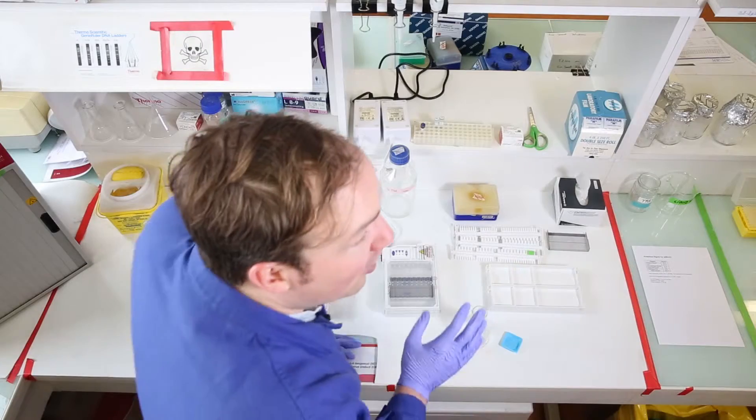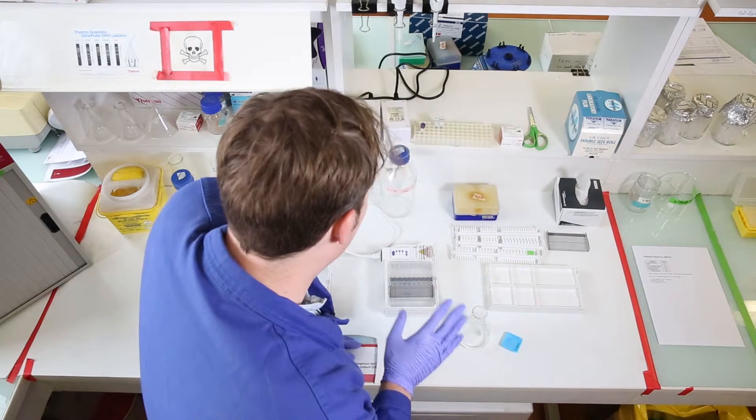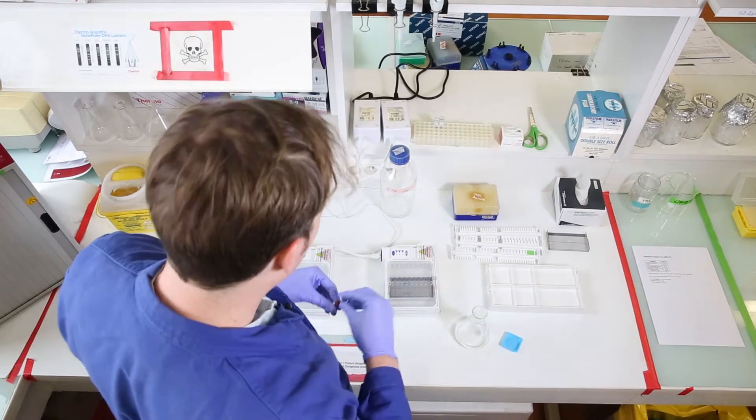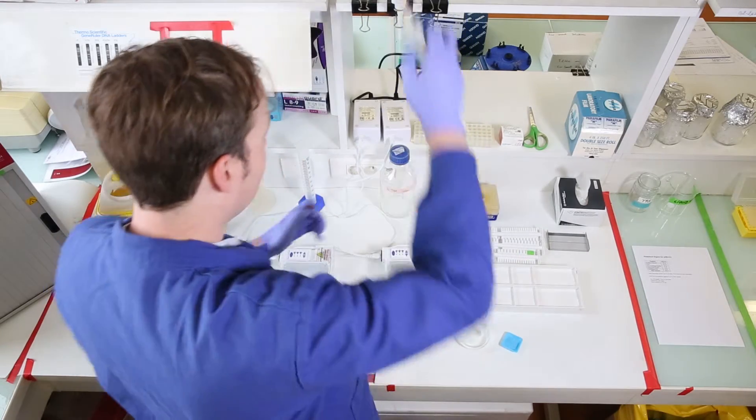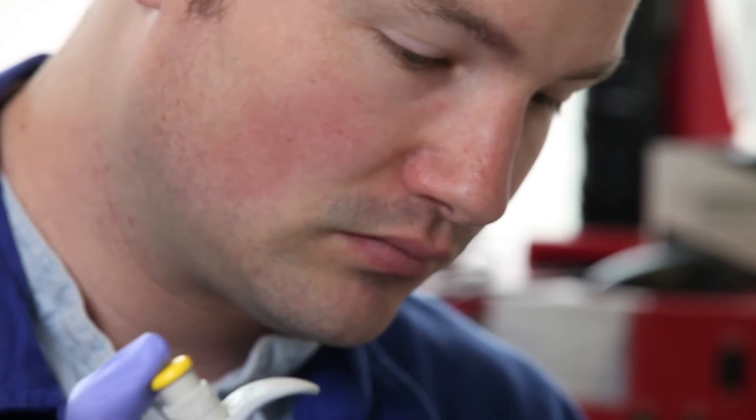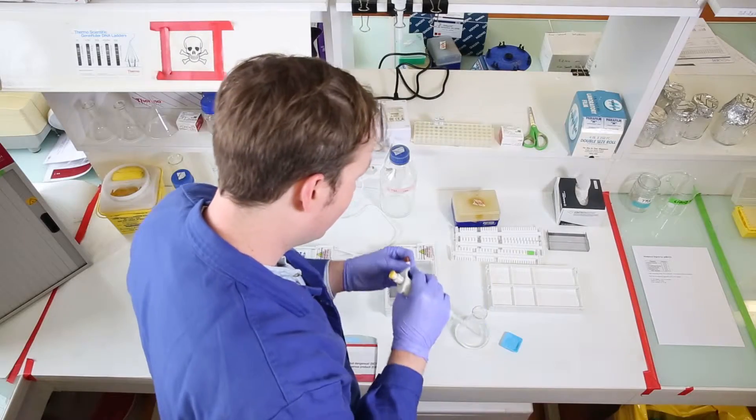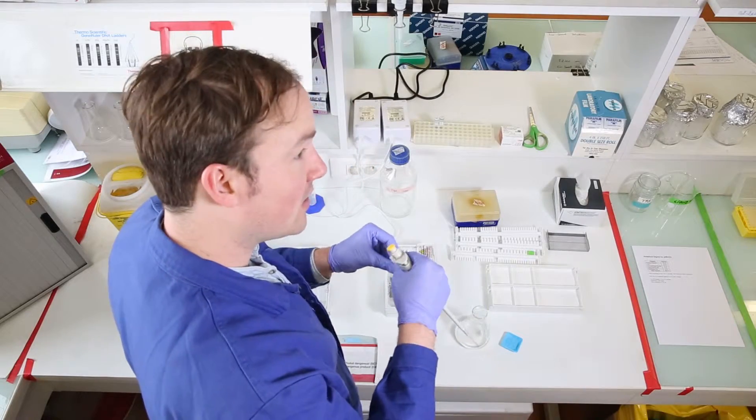Now we'll just leave that on the bench top for a few minutes to cool down until it's cool enough to handle before the next step. We've let our gel cool down a little bit. Next we'll add 5 microliters of DNA stain, so this is going to allow us to visualize our DNA bands by making them fluorescent. Nice bright red DNA stain.